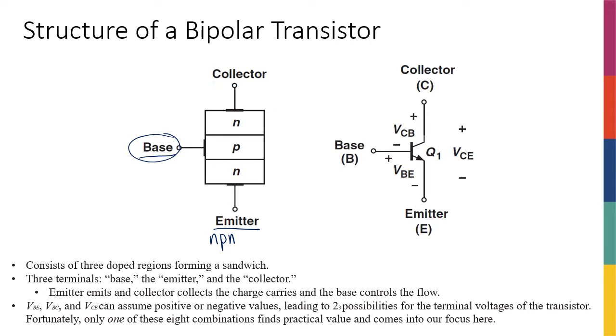The symbol that we use for transistors, at least for an NPN transistor, looks like this. We have the base terminal connected to this middle part here, and then the emitter and collector connected to the two sides.